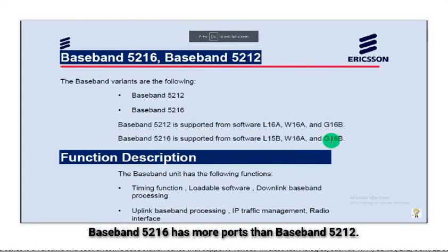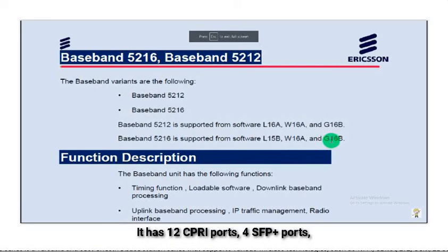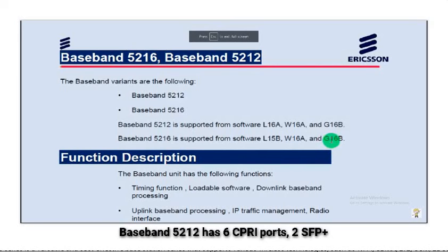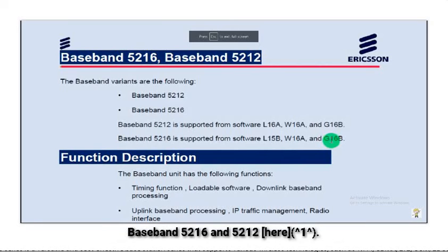Baseband 5216 has more ports than Baseband 5212. It has 12 CPRI ports, 4 SFP+ ports, 2 RJ45 ports, and 2 USB ports. Baseband 5212 has 6 CPRI ports, 2 SFP+ ports, 2 RJ45 ports, and 2 USB ports. You can find more information on the Ericsson Baseband 5216 and 5212 in the referenced document.